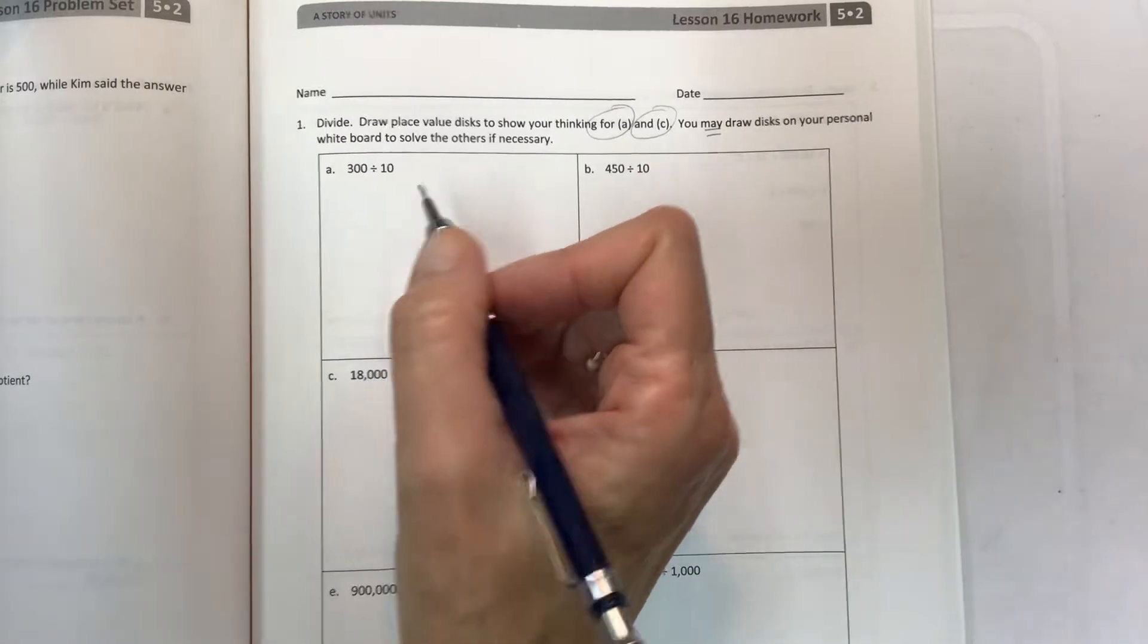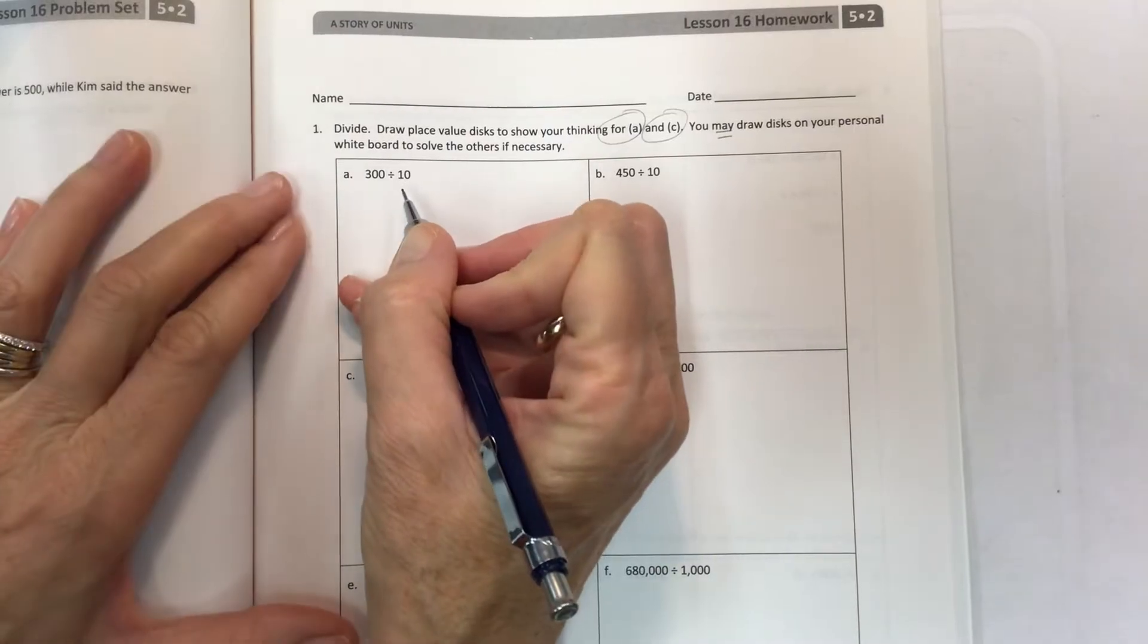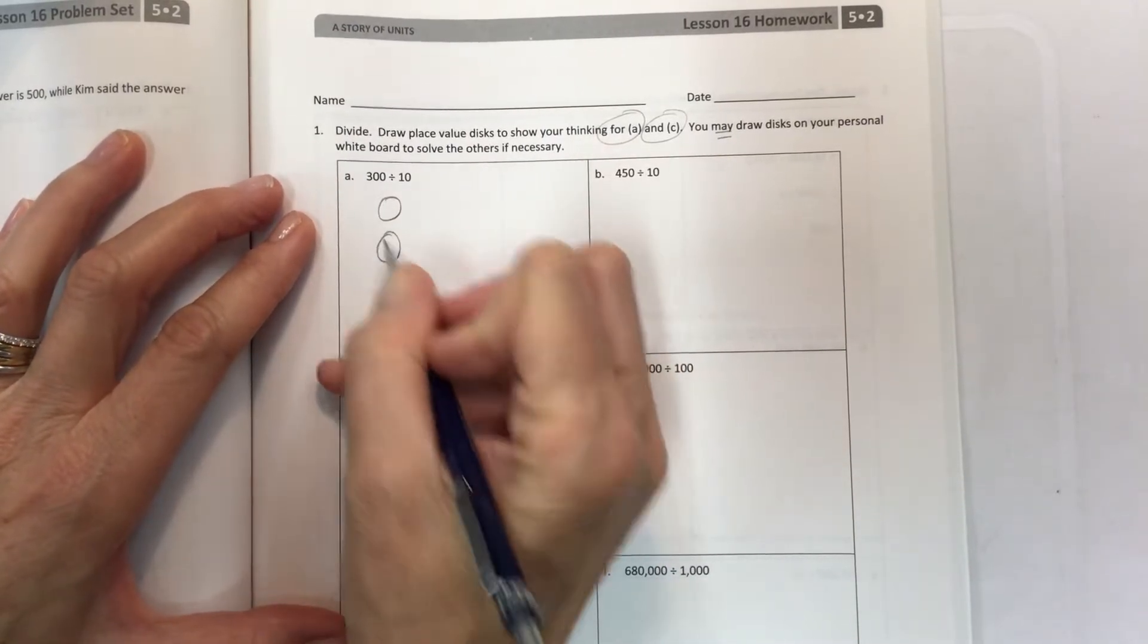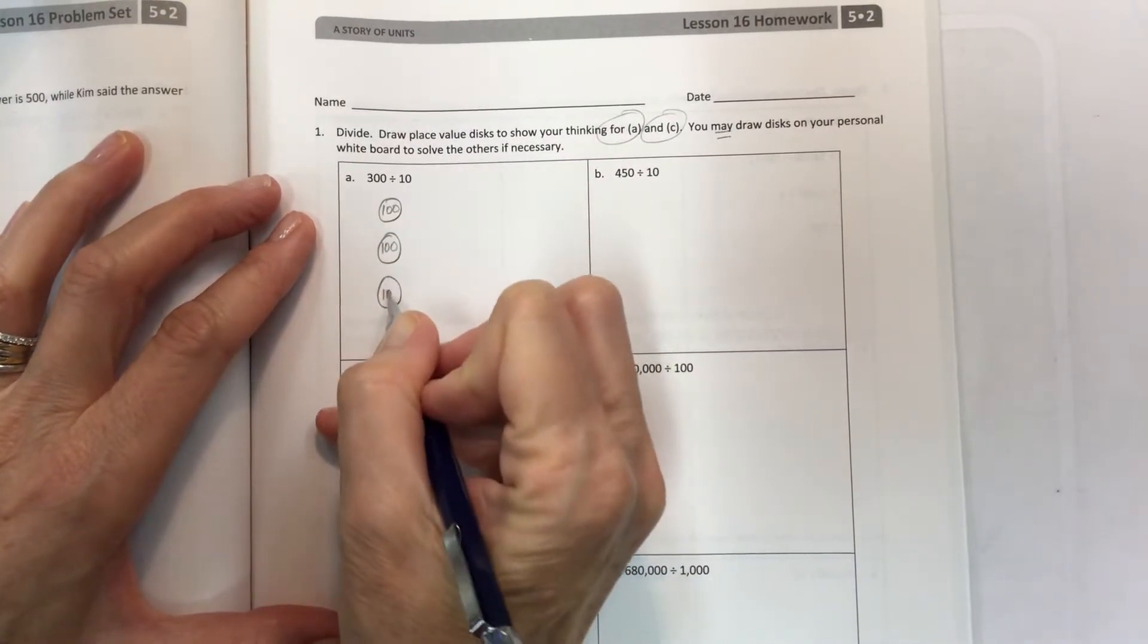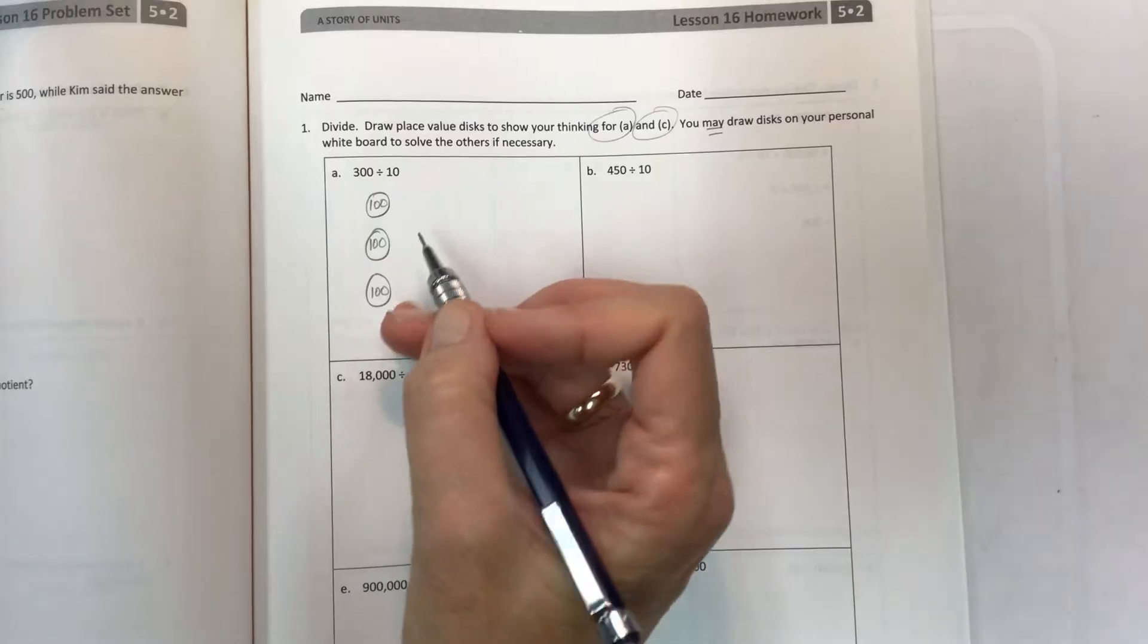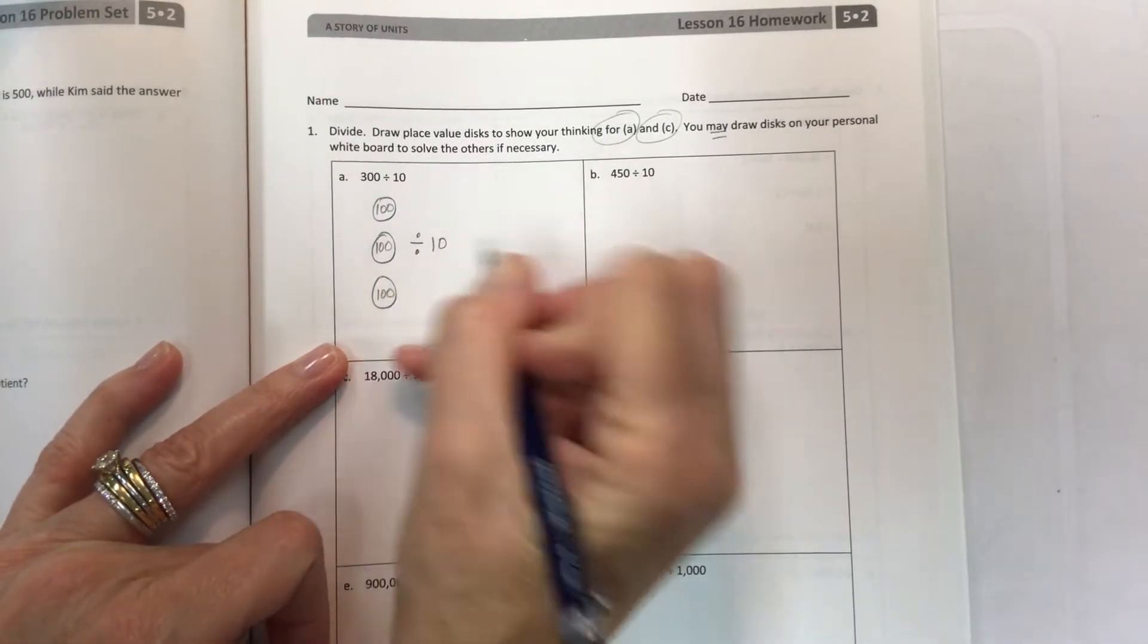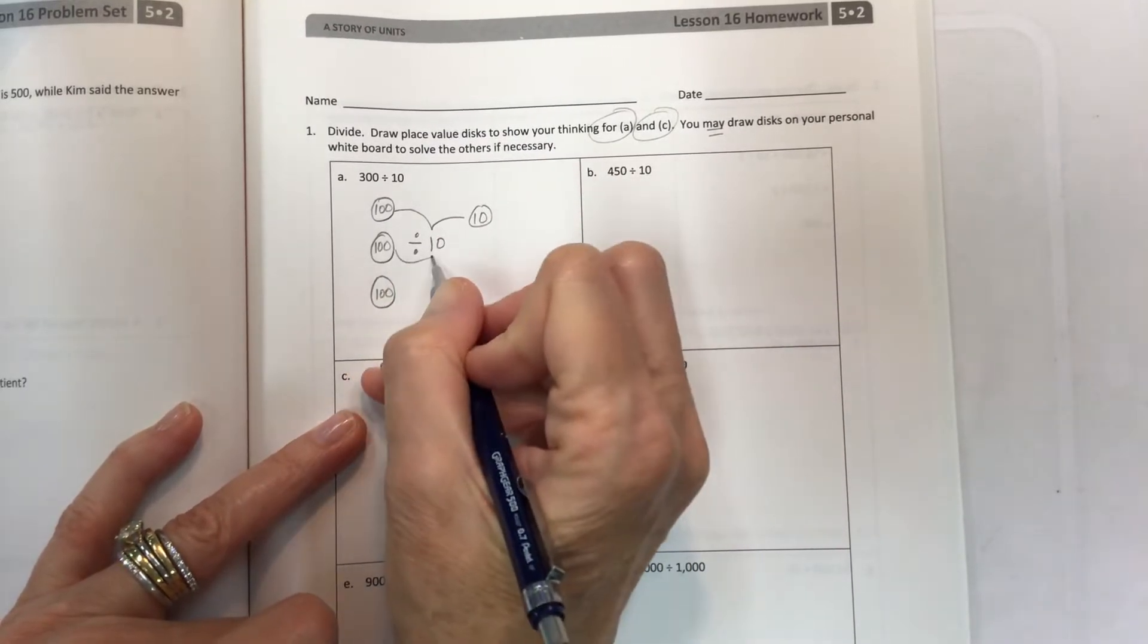We're going to get started with our discs for A. So we have 300 divided by 10, which is going to be 300 discs with 100 in each one, because 100 plus 100 plus 100 is 300. Then we're going to divide by 10, and so each time I divide 100 by 10 I get 10.